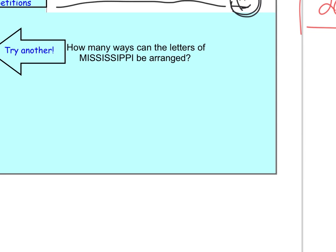So if I can rearrange Mississippi, well, it's 11 letters. So I've got four S's, four I's, and two P's.